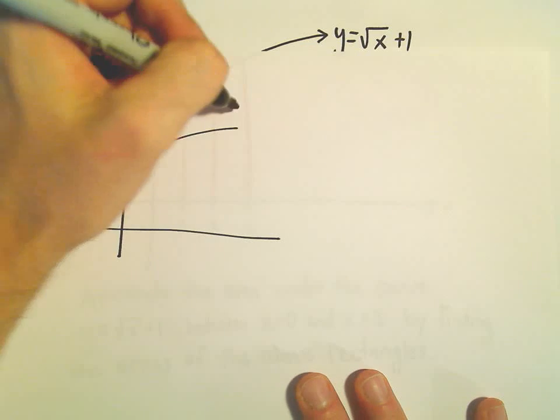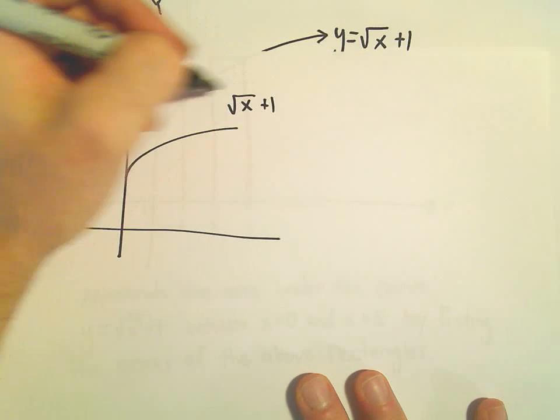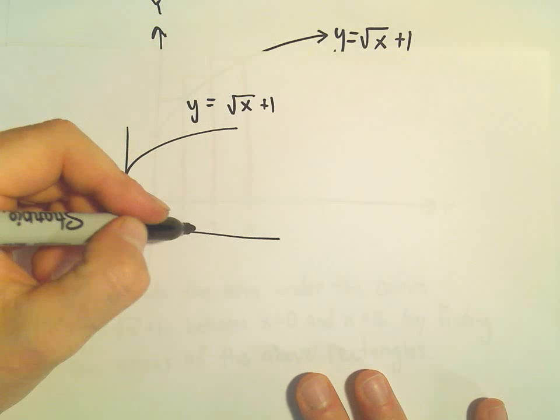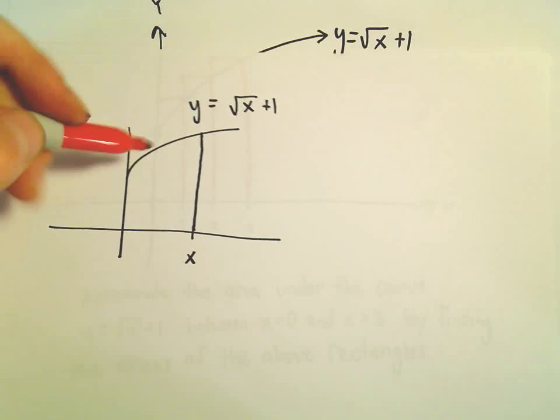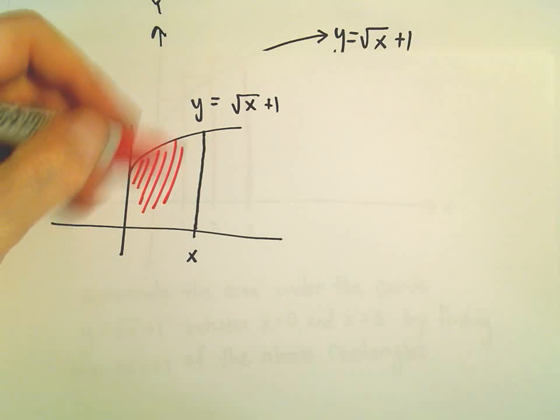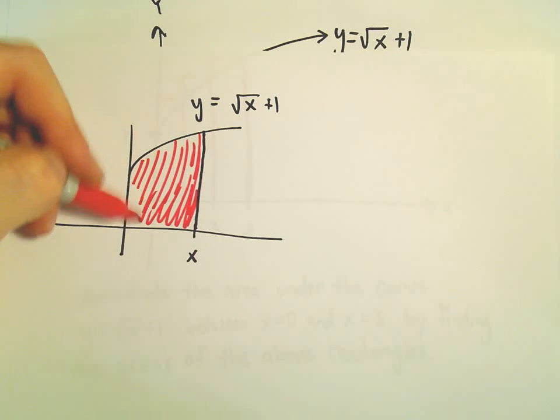So there's square root of x plus 1. If you go from x equals 0 to x equals 3, we're trying to figure out what's the exact value of this area. That's what we're trying to figure out exactly.